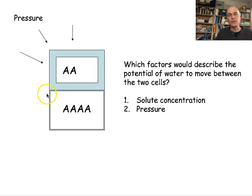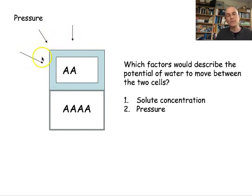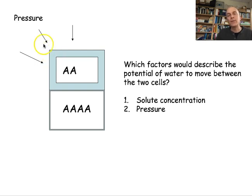The second factor describing water potential and water movement is pressure. If there is a lot of pressure on the outside of a cell, it can squeeze water out and move it into adjacent cells. Alternatively, inside pressure can build up as the cell wall becomes thicker, leaving less room for water inside.